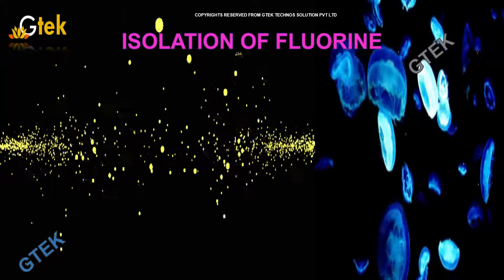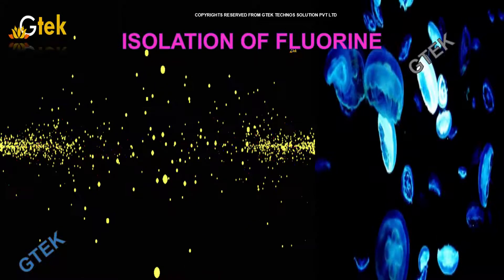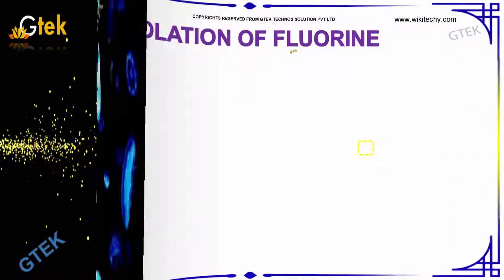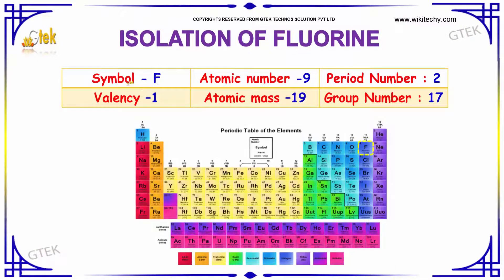Let's discuss the isolation of Fluorine. The symbol is F, valence is 1, the atomic number is 9, atomic mass is 19, and period number is 2.